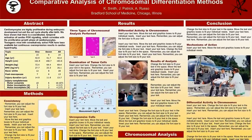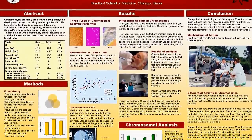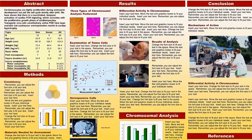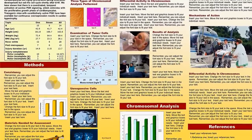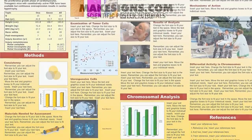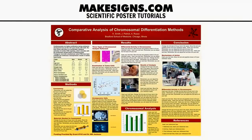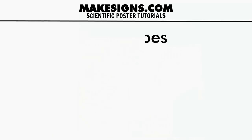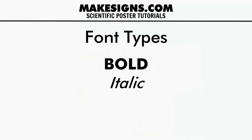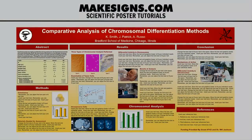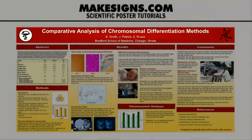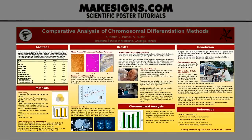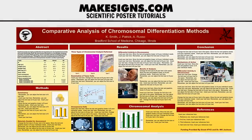Body copy and captions would be your smaller text. Rather than target a specific point size, just make sure that the text size for each part of your poster is balanced and consistent. If the relative size of each part looks good on your monitor, your poster will look great. Your title and subheadlines should be bold text, and your body copy should be regular text without being bold or italicized. Captions are often in italics.